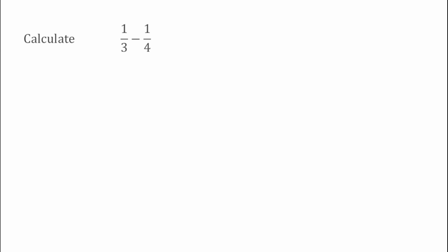For this first example we've got 1 over 3 take away 1 over 4. Again we need a common denominator, so just like when we did addition, we find the lowest common multiple. The lowest common multiple of 3 and 4 is actually 12, so we're going to turn these two fractions into fractions over 12.